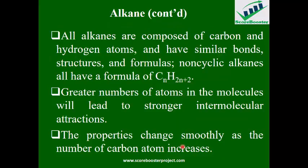Continuing with alkanes: all alkanes are composed of carbon and hydrogen atoms with similar chemical bonds, structures, and formulas. The general formula is CnH2n+2. If you have one carbon, it is CH4; two carbons give C2H6; three carbons, substitute n=3. As the number of carbons increases, the number of atoms in the molecule increases, leading to stronger intermolecular attractions, and properties change smoothly.